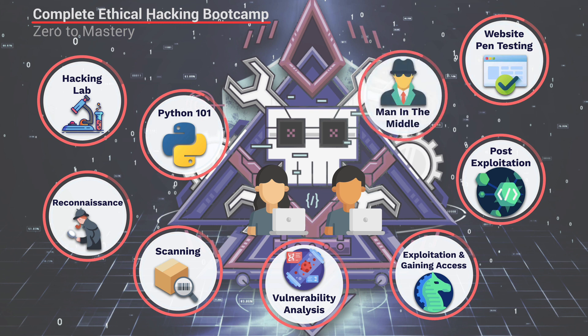Then we get into something that you have to know as an ethical hacker: the man-in-the-middle attack. This is an attack that is used inside a network, and it allows us to sniff any unencrypted data and see it in plain text. We could use this technique to see passwords for some websites, and we're going to cover some of the main tools that hackers use when doing a man-in-the-middle attack.